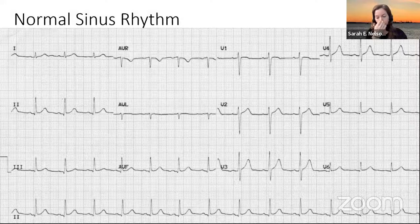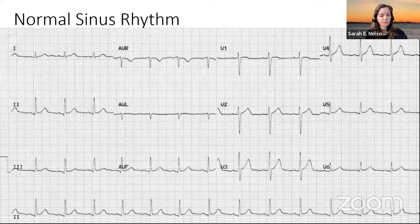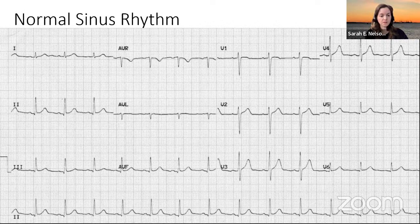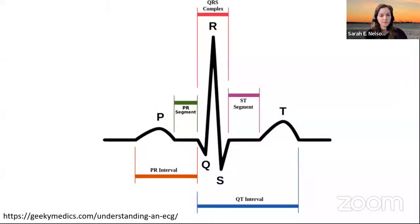We know our typical normal sinus rhythm. We're all largely familiar with EKGs that look like this. When we break it down into its components, we have to remember that there are really three main waves we look at: the P wave, the QRS complex, and the T wave.